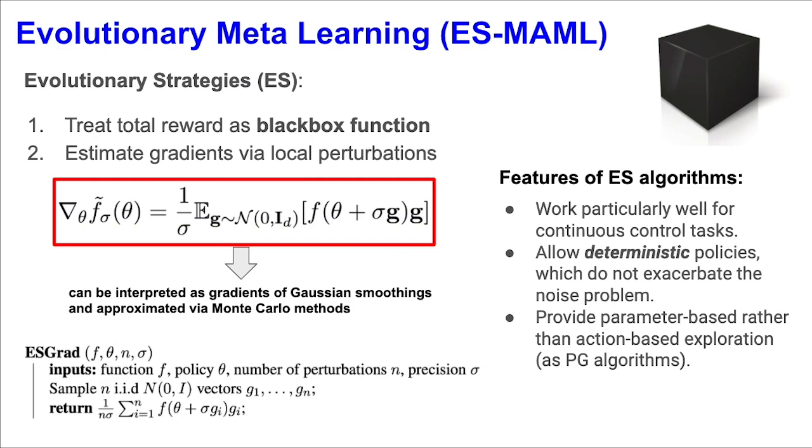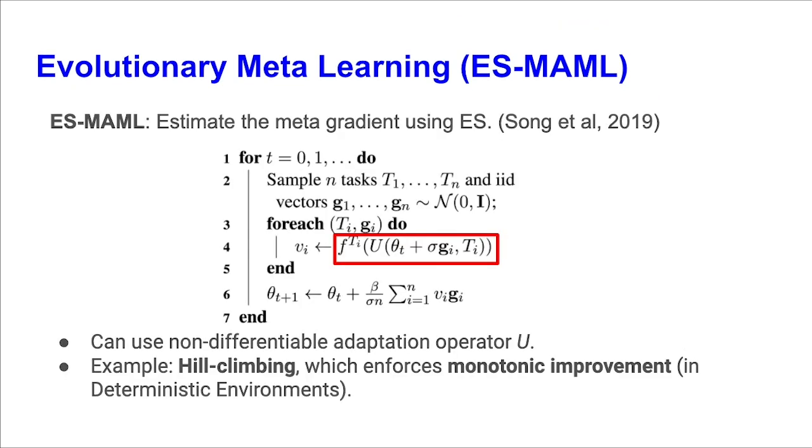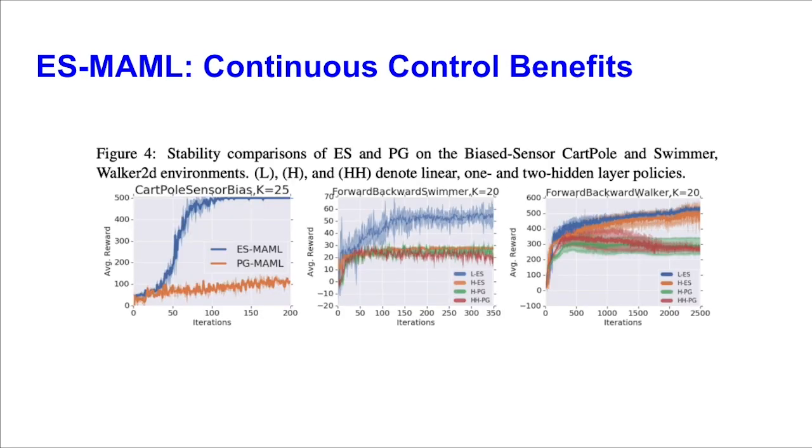We present ES-MAML, a previous work that combines evolutionary strategies, or ES, with the MAML framework. The base ES method treats the total reward as a black-box function and estimates gradients by using local perturbations via finite difference methods. ES works particularly well for continuous control tasks, as the black-box framework allows deterministic policies, which doesn't exacerbate the noise problem. Exploration is also performed by parameter changes, not by the policy's random actions, which is the case for policy gradient. ES-MAML possesses all of the mentioned benefits, but also allows a non-differentiable adaptation inner loop operator, shown here as the U operator. An important example of such an operator is the hill-climbing operator, which enforces monotonic improvement when the environment is deterministic.